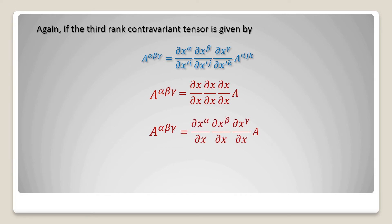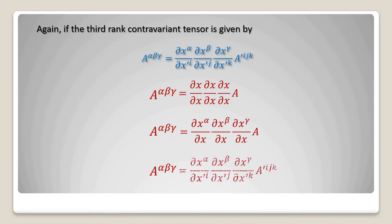In the next step write a upper suffix alpha beta gamma equal to del x alpha by del x, del x beta by del x, del x gamma by del x — because on the left hand side the upper suffixes are alpha beta gamma, so they go in the numerators of del x. In the final step, the dashed terms will be in the denominator: del x alpha by del x prime i, del x beta by del x prime j, del x gamma by del x prime k, into a prime upper suffix ijk. This goes from non-dash terms to dash terms, or non-primed to primed.